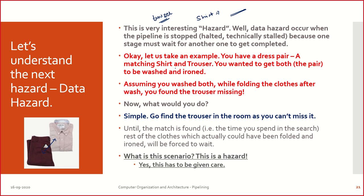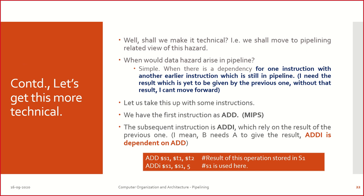Until the match is found, the rest of the clothes could have been folded and ironed, but they are supposed to wait. I have something in hand that can be done very easily, but since the previous thing is not completely available, I am stalling it. This is called a delay, this is called a hazard. I am not able to progress — that's what is happening, and that's called a hazard.